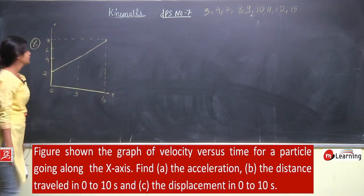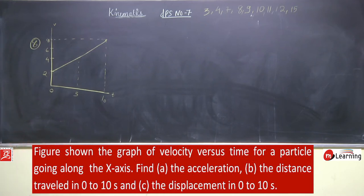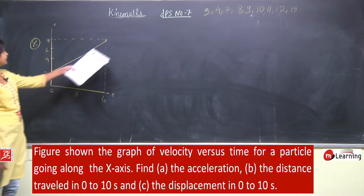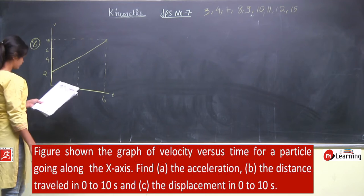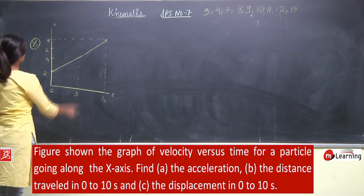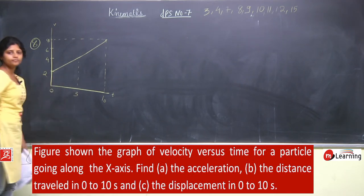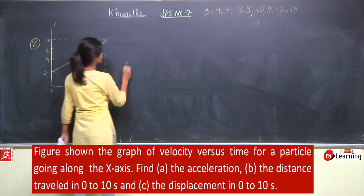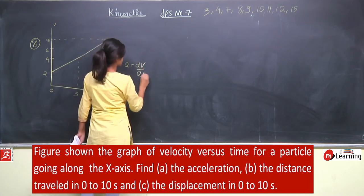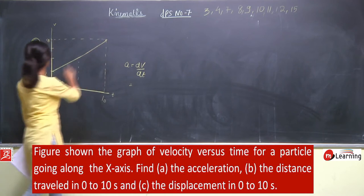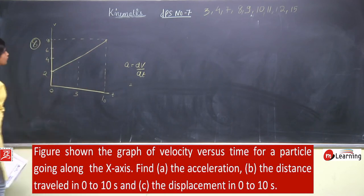पहले acceleration निकालते हैं। Acceleration निकालने के लिए क्या करें? Velocity constantly increase होते जा रही है, तो acceleration constant है — यह तो पता चल जाता है। और acceleration इसका slope होता है, हैना — acceleration क्या होता है? dv by dt. dv by dt इस graph का slope होगा।